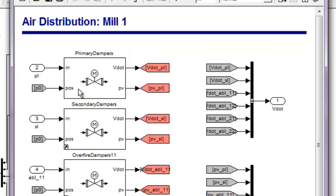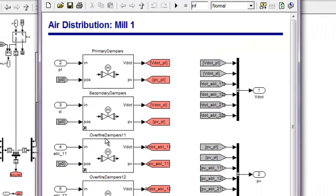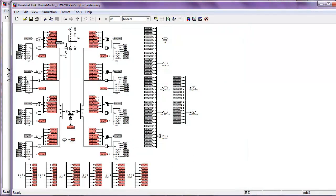You see here that the dampers are modeled via Thermolib valve blocks. You have here the primary, secondary dampers, overfire dampers, and so on. And this is repeated for each of the eight mills. Let's go back to the top view.